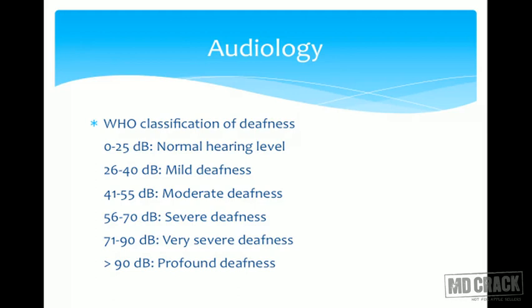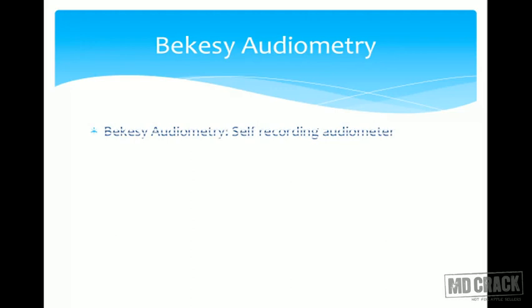Classification of deafness by degree of hearing loss: 0–25 dB is normal; 26–40 dB is mild deafness; 41–55 dB is moderate; 56–70 dB is severe; 71–90 dB is very severe; and more than 90 dB is profound deafness.